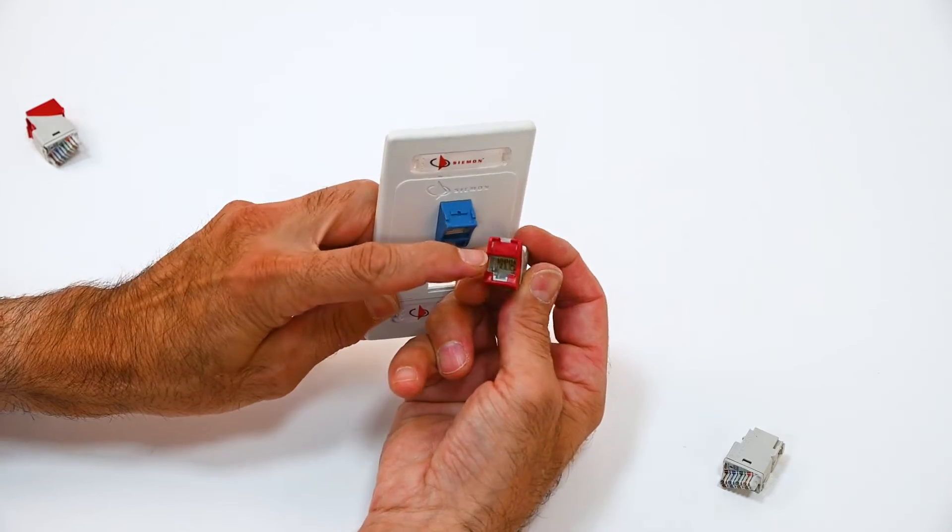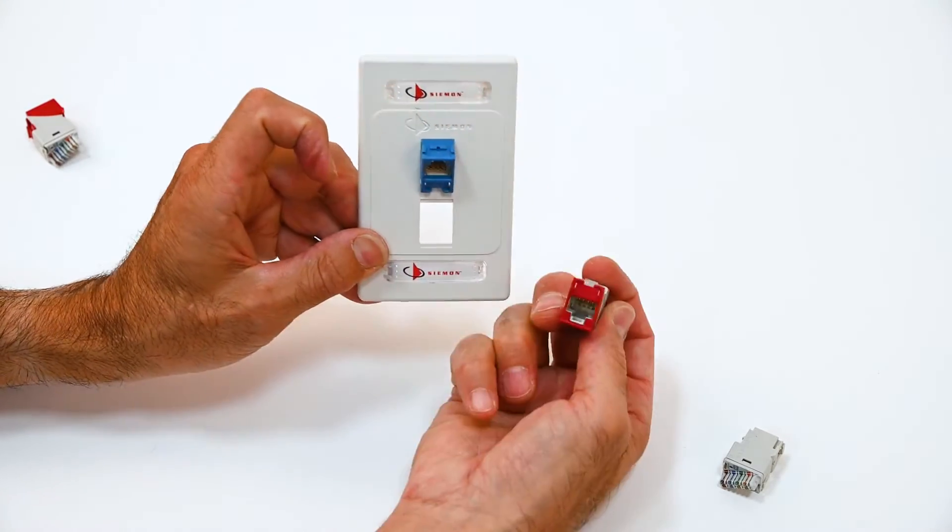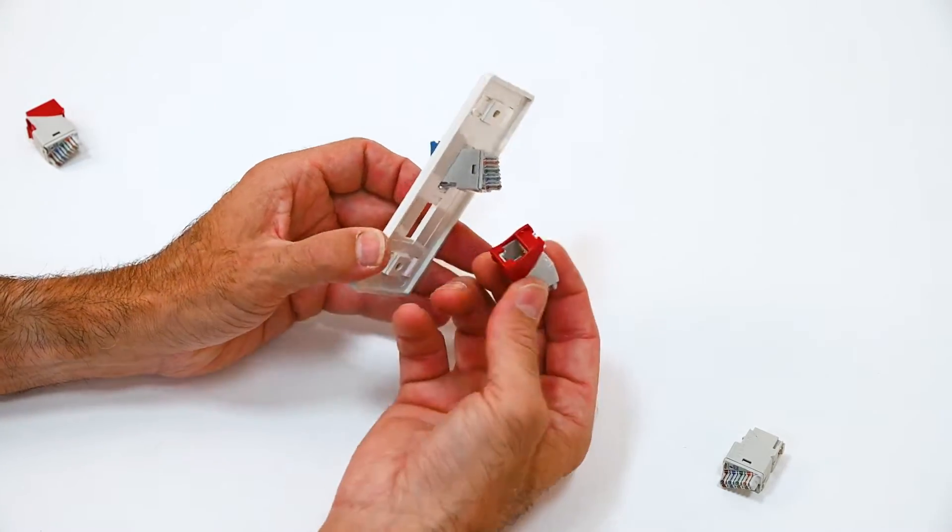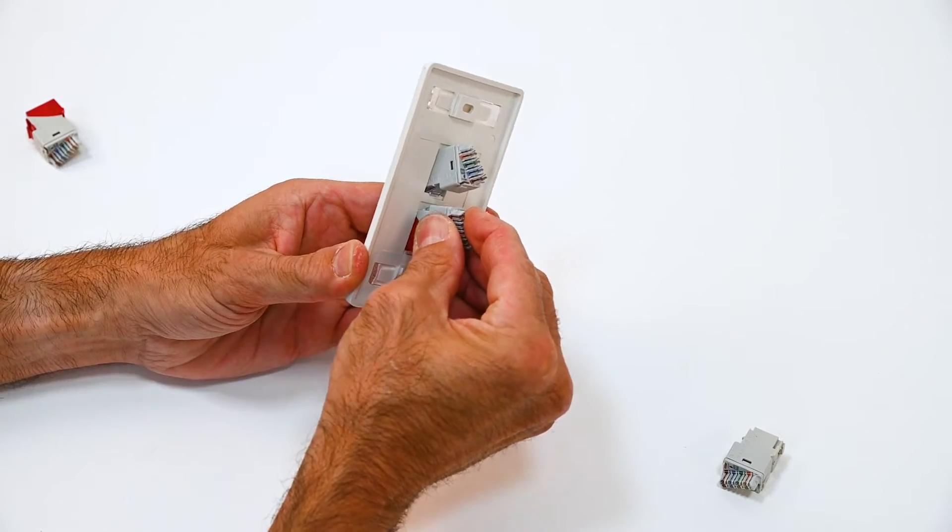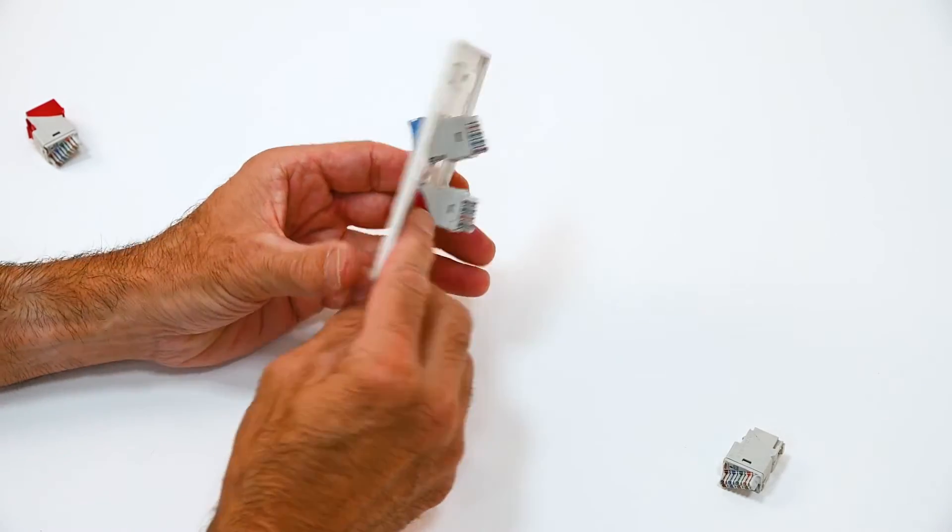The flat mount makes more sense to have the contacts on the upper side so you don't get dust settling on them. So you want to flip that over and mount that into the plate like this. They both latch in the same way.